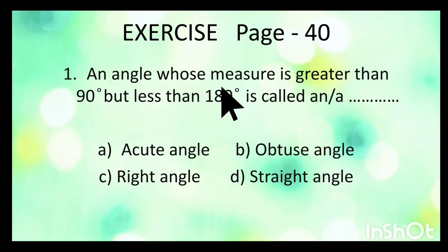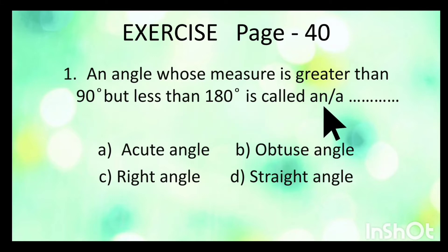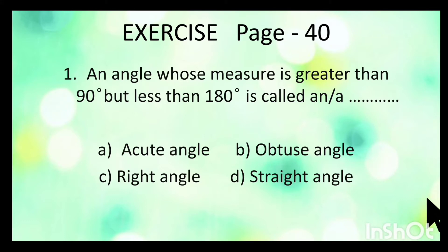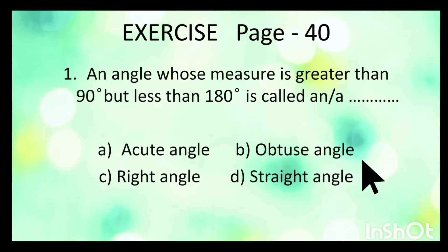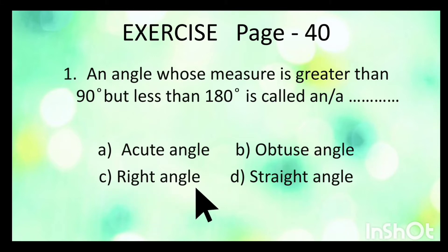An angle whose measure is greater than 90 degrees but less than 180 degrees is called a blank. Students, you have learnt about angles. Angles which are below 90 degrees are called acute angles. Angles which are above 90 degrees are called obtuse angles. Angles equal to 90 degrees are called right angles. Angles of 180 degrees are called straight angles.